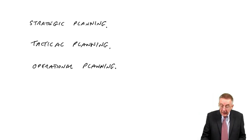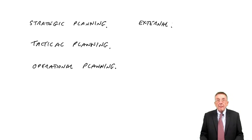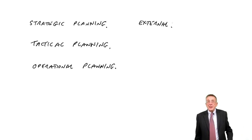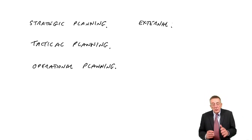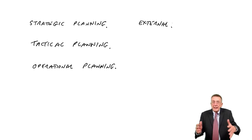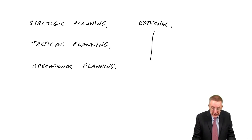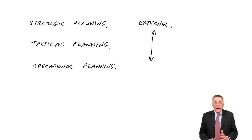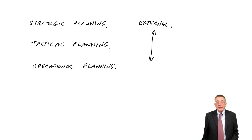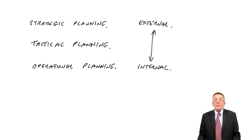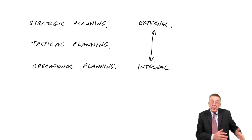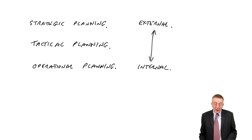The managers at each of those levels need information to help them with that planning. At the strategic level, they're going to need a lot of external information — if you're thinking of opening a new office or factory, you need to know what other similar businesses are operating there and what the competition will be like. Whereas at the operational level, the day-by-day running of the business, that's very much internal information — information generated within the business, like how many we're producing and how many hours of labour we need.